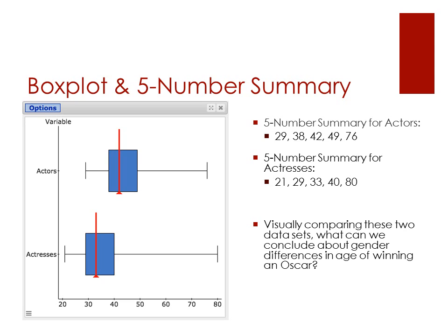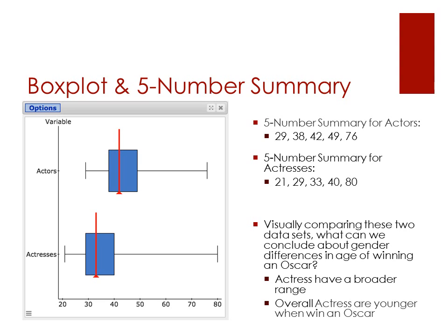Let's visually compare these data sets. What can we conclude about gender differences in the age of winning an Oscar? We can see that actresses have a broader range — they go from much younger to a little bit older than actors when winning the Oscar. Overall, actresses are younger when winning an Oscar; the space between the first and third quartile is further to the left, meaning younger ages, compared to actors.